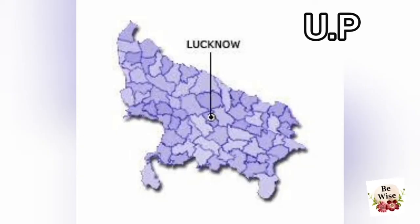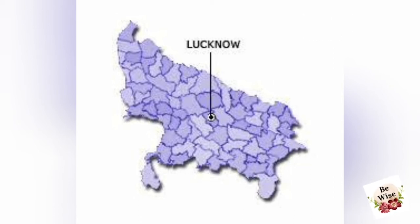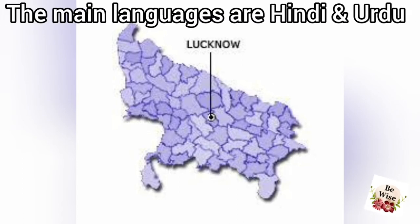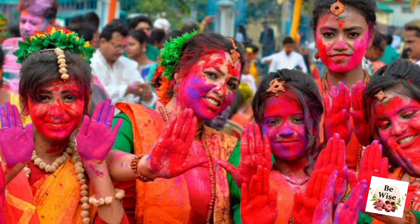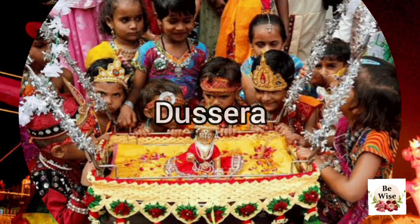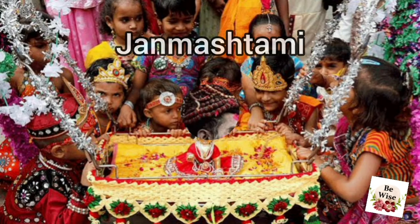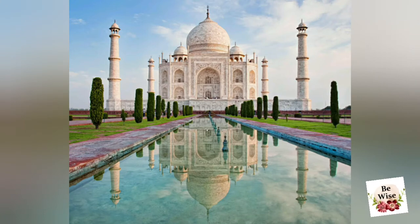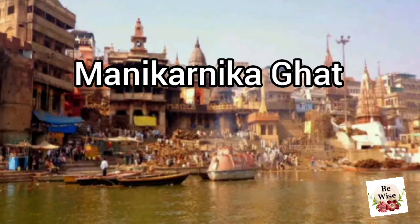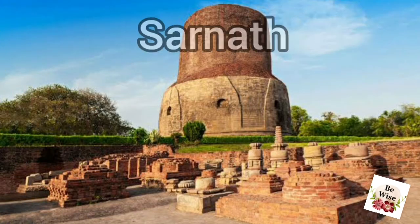Lucknow is the capital of Uttar Pradesh. Hindi and Urdu are the main languages spoken there. Numerous festivals are celebrated in Uttar Pradesh, including Holi, Mahashivratri, Dussehra, Janmashtami, and Kumbh Mela. Some places of interest are the Taj Mahal, Agra Fort, Manikarnika Ghat, and Sarnath.